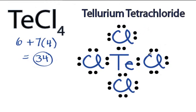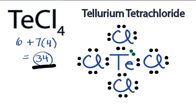So we've used 32 valence electrons, and the octets are full for each of the atoms in TeCl4. But we have 34, so we have an extra pair of valence electrons that we need to do something with. What we can do is place them on the central atom, like this, and now tellurium has more than 8 valence electrons.